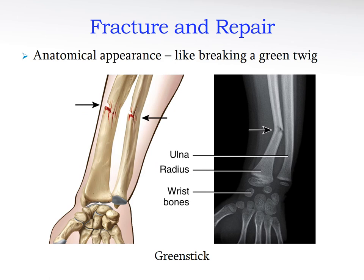A greenstick fracture is like breaking a green branch — it bends rather than fully breaking, fracturing on one side. This is typical in children aged five to seven, often in the forearm. The bone bends because it still contains cartilage and is soft. In adults, a broken bone typically results in two clearly separated pieces.